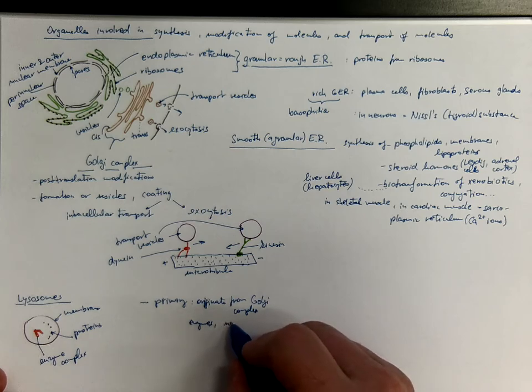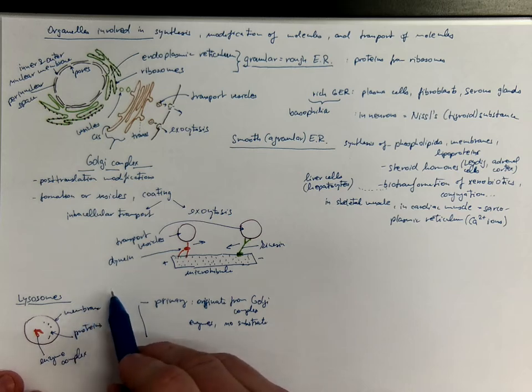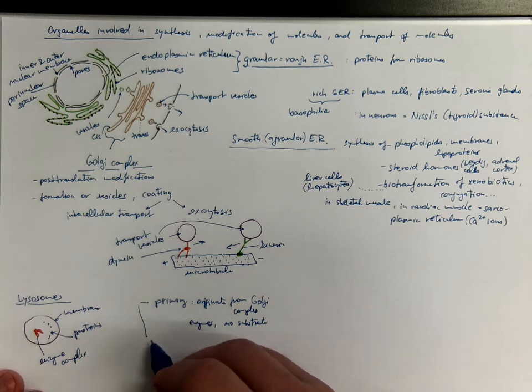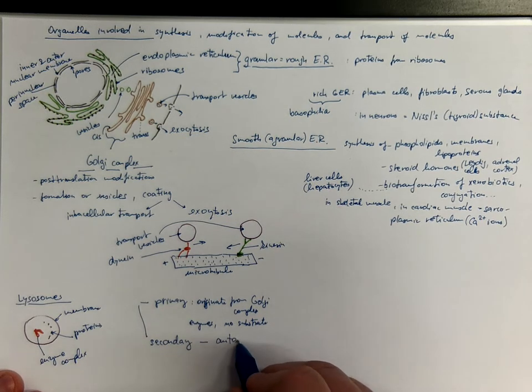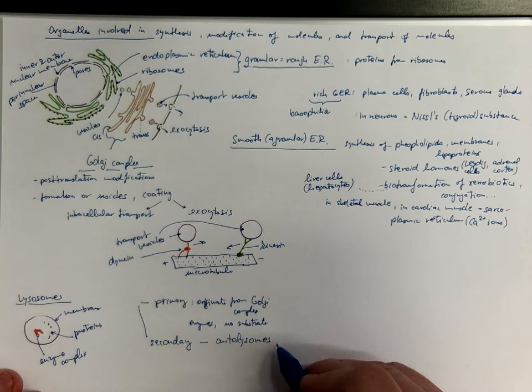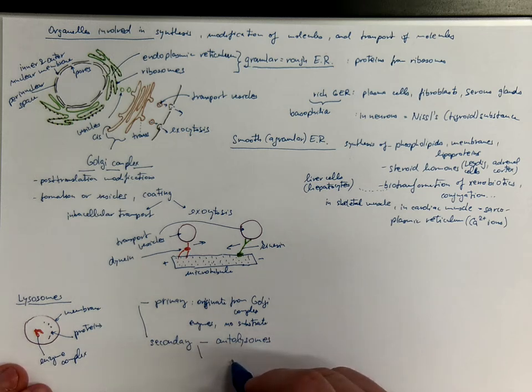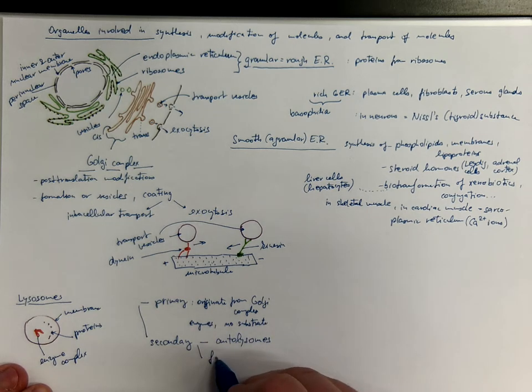But there is no substrate. So they are waiting. They can then fuse with other organelles, particles, molecules coming from inside of the cell. That's why we call them autolysosomes. So they become secondary lysosomes, which could be autolysosomes responsible for ingestion and degradation of molecules coming from inside of the cell, or they can fuse with phagosomes containing particles and substances coming from outside of the cell. That's why we call it phagolysosome.